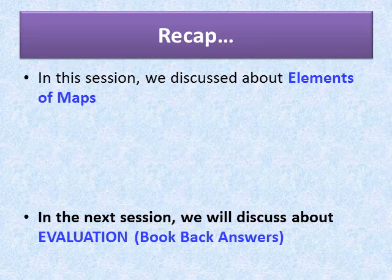Time to wrap up our session. In today's session we discussed about the elements of a map. The basic essential elements are title, direction, scale, legend or key, and sign and symbol. Title: every map has a title describing the information given in it. Direction: mostly maps are drawn with north orientation. Scale: the ratio between the distance on the map between two points and the actual distance between two places on the ground. Legend or key: explains the symbols used to represent various physical and cultural features. The Survey of India has standardized the set of conventional symbols and signs to depict certain things on the map.